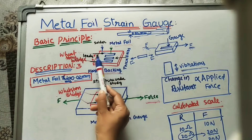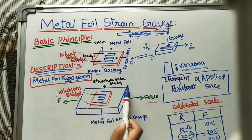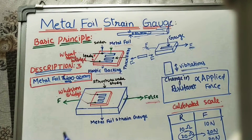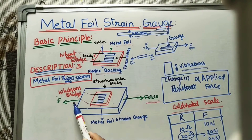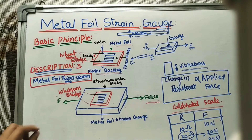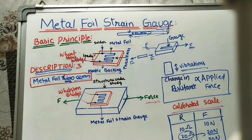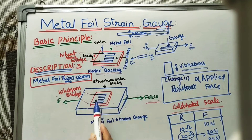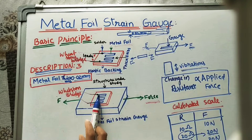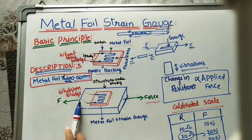For working operation, we stick the strain gauge on the surface with an adhesive, and the two ends of the terminals are connected to the Wheatstone bridge. Now, when we apply forces, this length gets more because we are stretching the structure. The other two dimensions — width and thickness — are getting reduced. Because of the change in length, these dimensions are also changing, and that change in dimension changes the resistance of this foil. The change in resistance can be found using the Wheatstone bridge.